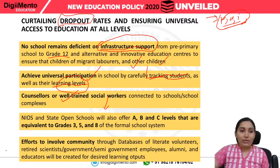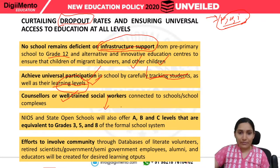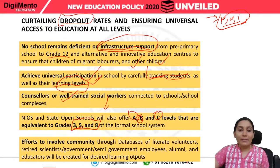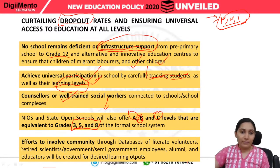NIOS — the National Institute of Open Schooling — and state open schools will also offer A, B, and C levels that are equivalent to grades 3, 5, and 8 of the formal school system.